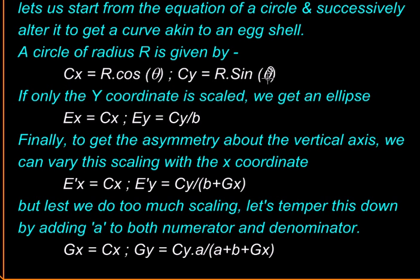We are going to take this equation, take this Cx, x coordinate the same, but modify the y coordinate. Take this Cy and divide it by something greater than 1 to get an ellipse. This is the equation of an ellipse. I'm using Ex and Ey for the coordinates.